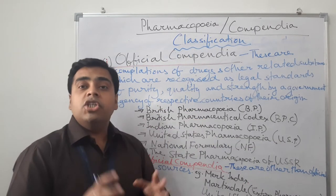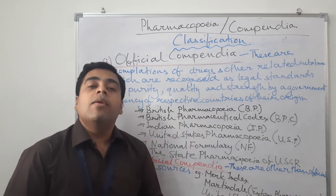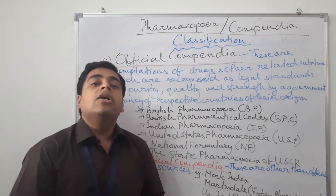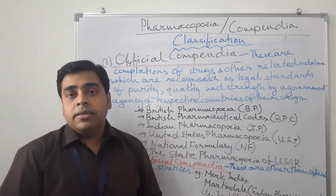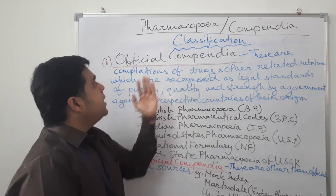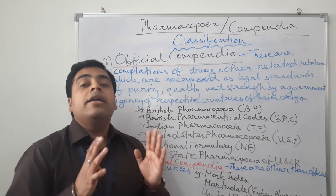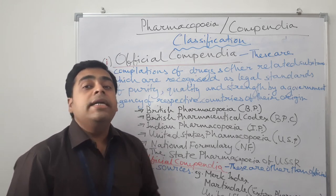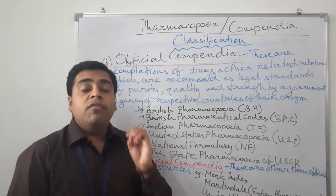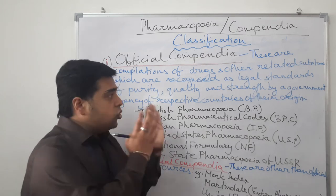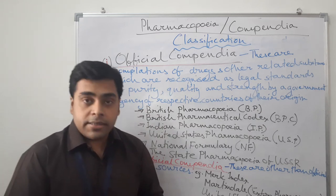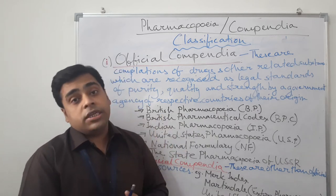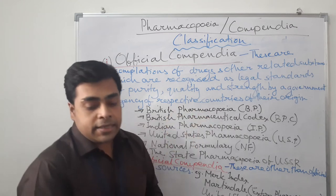Let us come to the classification of these formularies — pharmacopoeia and those which we collectively call compendias. Basically we have two types of compendias: the official compendia and non-official compendia. What are official compendias? These are compilations of drugs and other drug-related substances which are recognized as legal standards of purity, quality, and strength by a government agency of the respective countries of their origin.